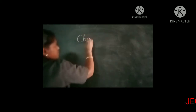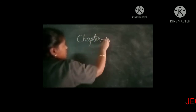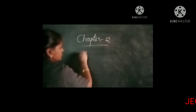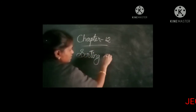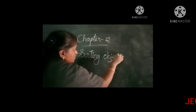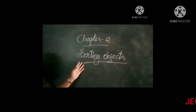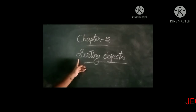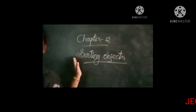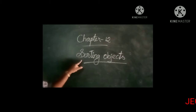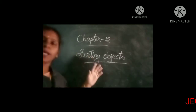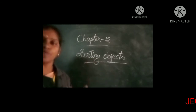Chapter 12: Sorting Objects. Sorting means to group things by separating them from a given collection of objects.